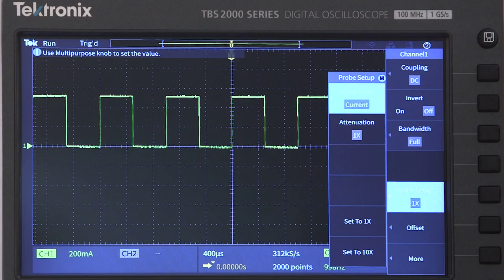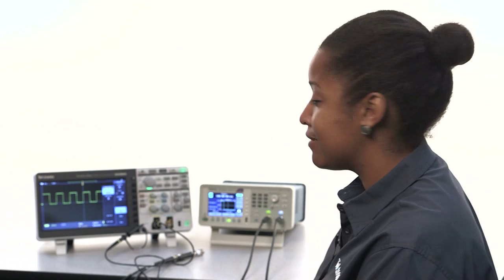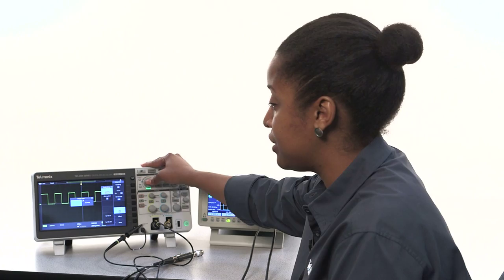For the rest of the video, I'm going to be using a function generator and a couple of cables. So I'm going to leave the attenuation at 1, but I'm going to switch the probe type back to voltage.